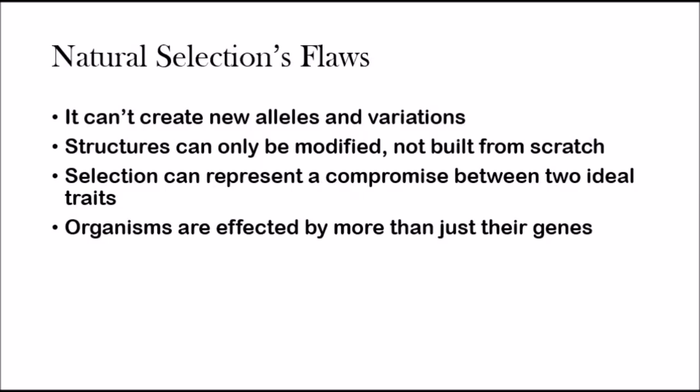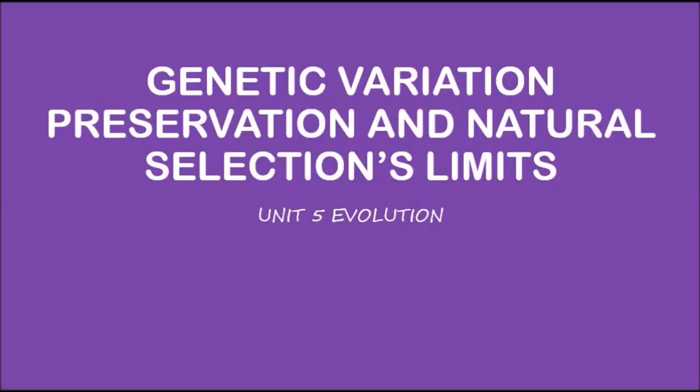Another flaw is that selection can only represent a compromise between two ideal traits — you never see entirely new traits forming, just a compromise. The last flaw is that organisms are affected by more than just their genes. And that's it — genetic variation and natural selection's limits are as simple as that.